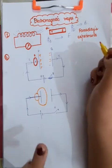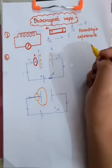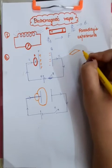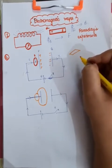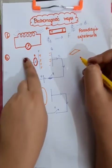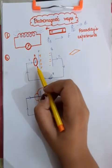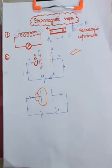We know from Oersted's experiment that when current actually flows somewhere and you keep a magnetic needle nearby, the needle starts showing deflection. When current flows from any region, a magnetic field is created there. So since current is flowing through the wires, the surrounding regions of the wire will have a magnetic field.